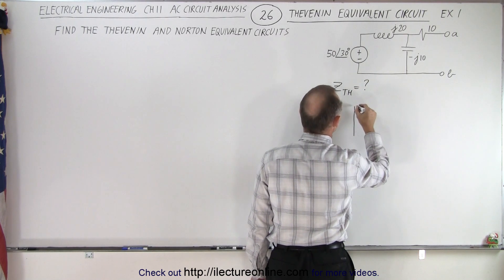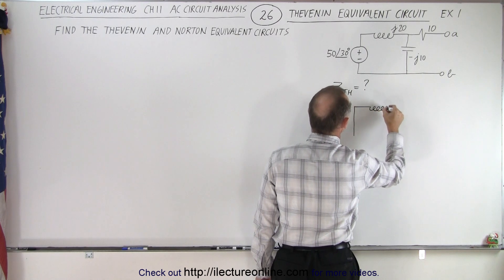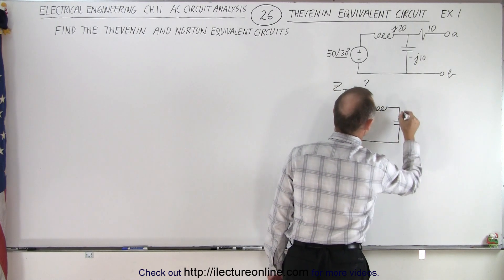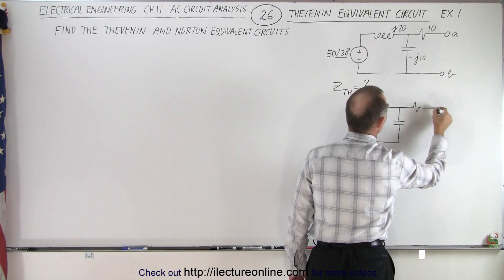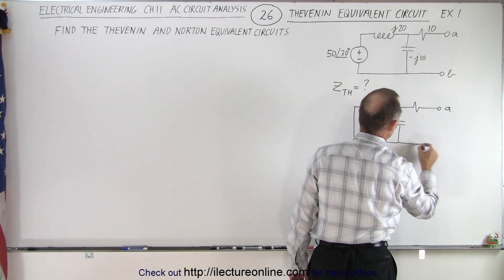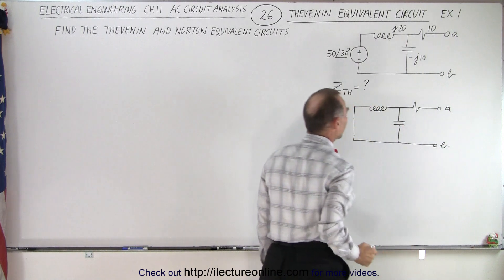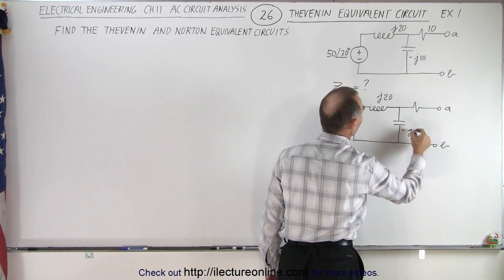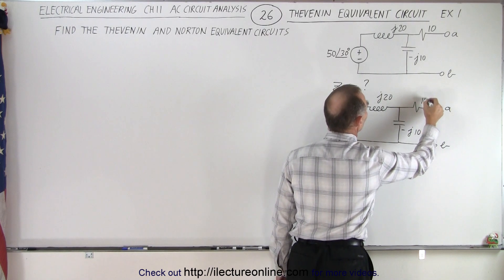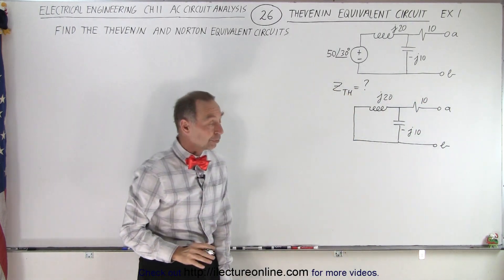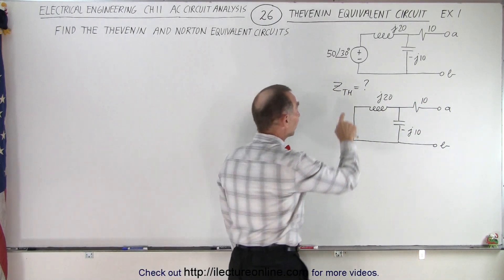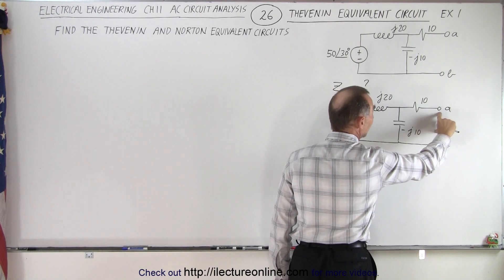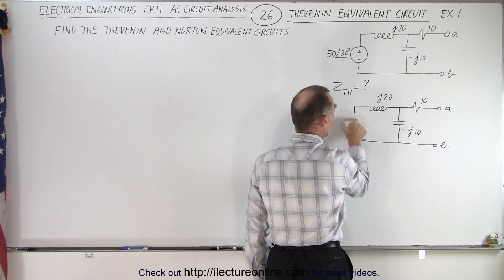With the source removed, it becomes a short circuit, and we still have an inductor, a capacitor, and over here we have a resistor, then we have A and B terminals. The inductor is j20, the capacitor is -j10, and the resistor is 10 ohms. Now we're going to find the Thevenin impedance, which is the same as the impedance between terminals A and B with the source removed.